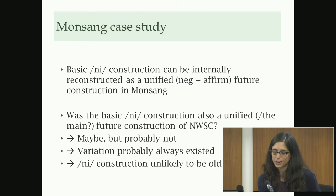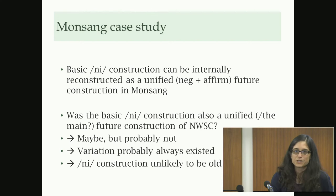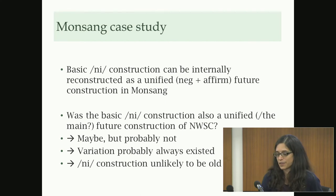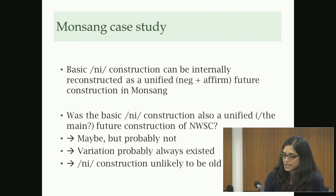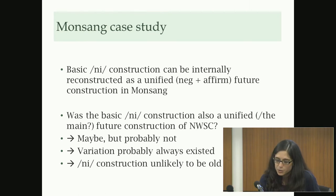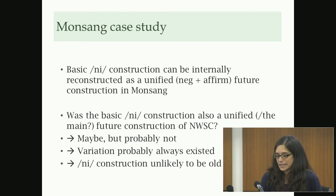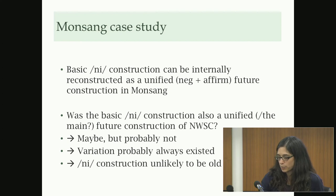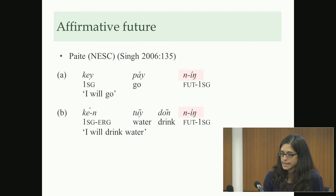On second thought, it's probably not that straightforward. You'll be seeing lots of variation in affirmative contexts, so saying that at the stage of Proto-Northwestern there was really just one construction doesn't make sense — if there's that much variation today, these languages are just happy to innovate affirmative future constructions. I'd be happier reconstructing variation and assuming the proto-language was similar to modern languages.